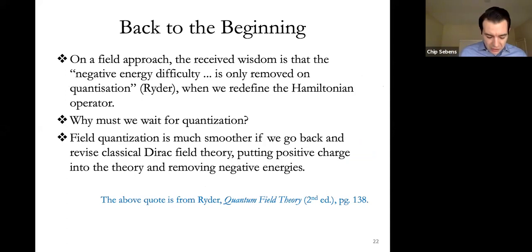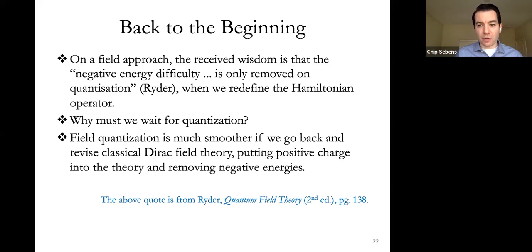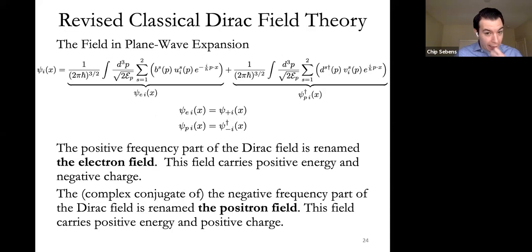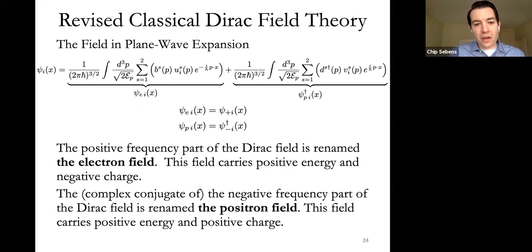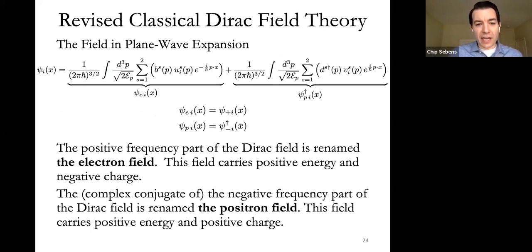The standard wisdom is that negative energy problems from classical Dirac field theory are removed only when moving to quantum field theory. But actually, they're only removed after redefining the Hamiltonian operator. So why wait until quantum field theory to make these corrections? We can make them in the classical field theory, making the quantization smooth without corrections. Looking at the quantum field theory we ultimately want, we see positive frequency modes should be associated with positive energy and negative charge, and negative frequency modes also with positive energy and negative charge.